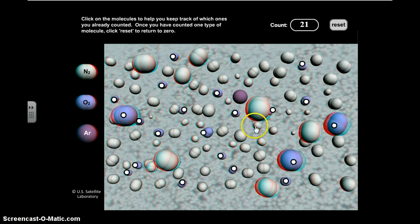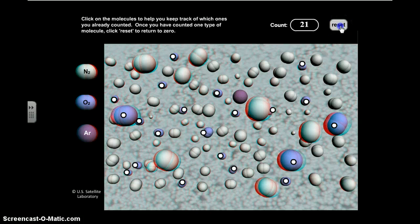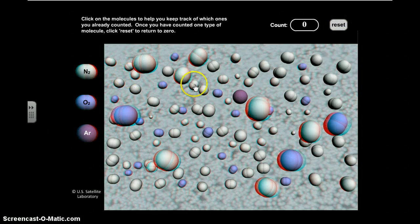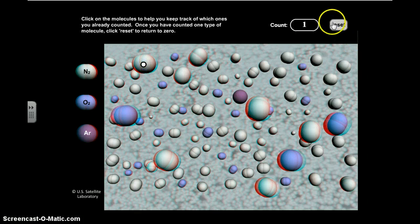21 out of 100. And percentage wise, that's 21% of the air that we breathe is oxygen. I'm not going to click through the others, but the last one is nitrogen. And if I were to click on all of these, I would end up getting the number 78.